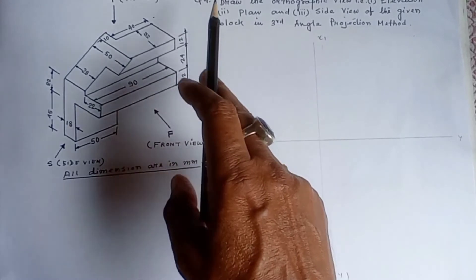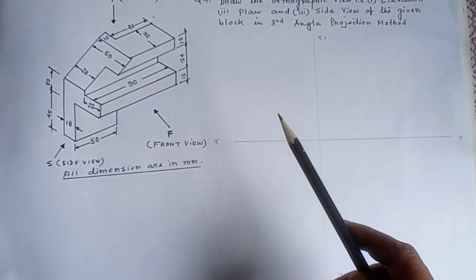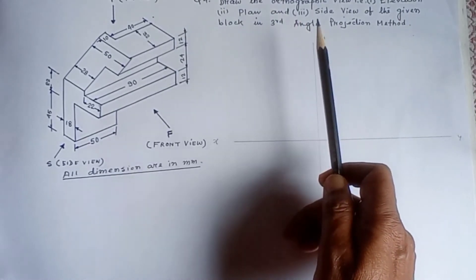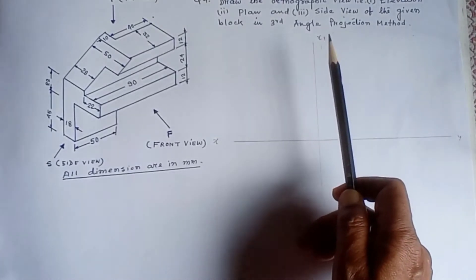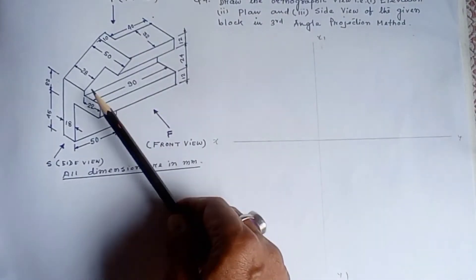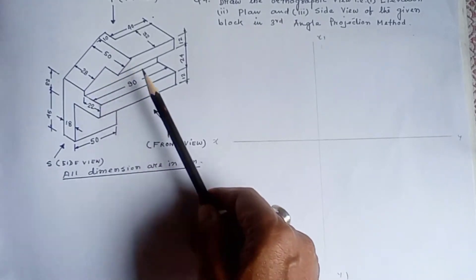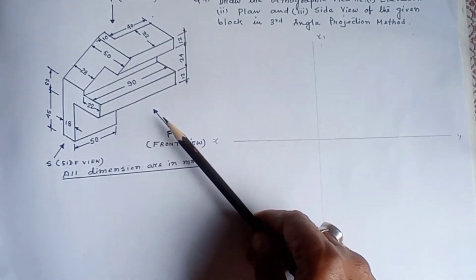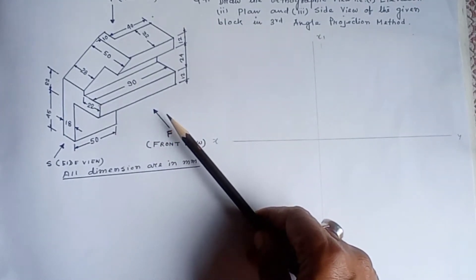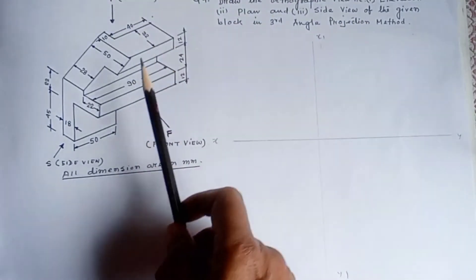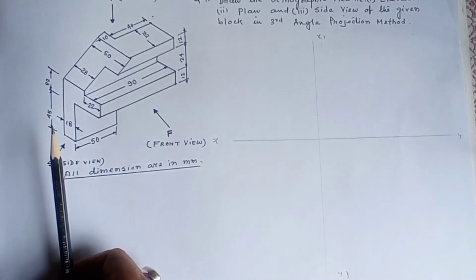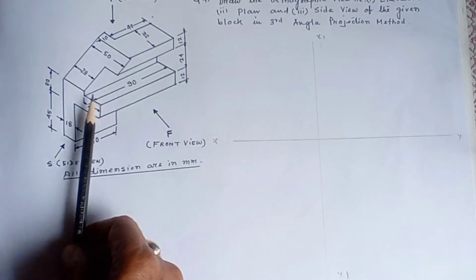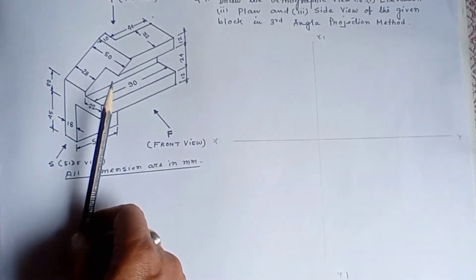Question number 4: Draw the orthographic view — that is elevation, plan and side view of the given block in third angle projection method. We can see the front view of an isometric view and the front view of an elevation.